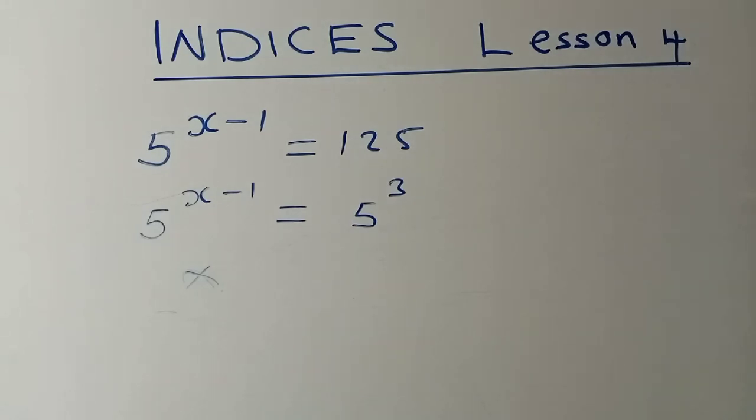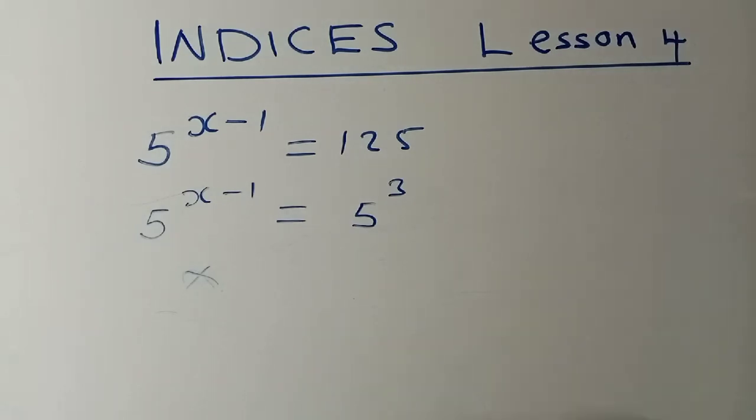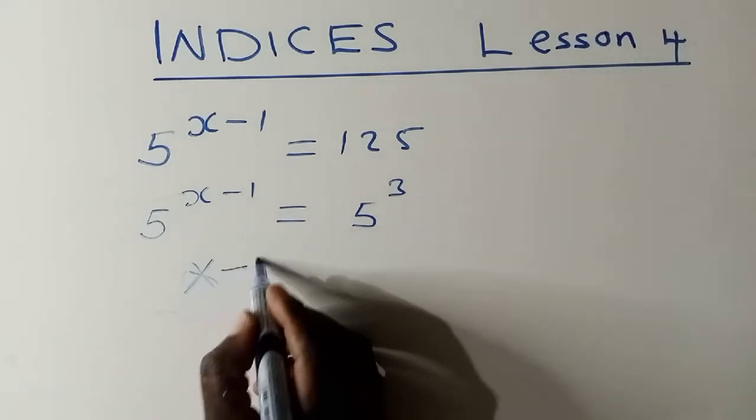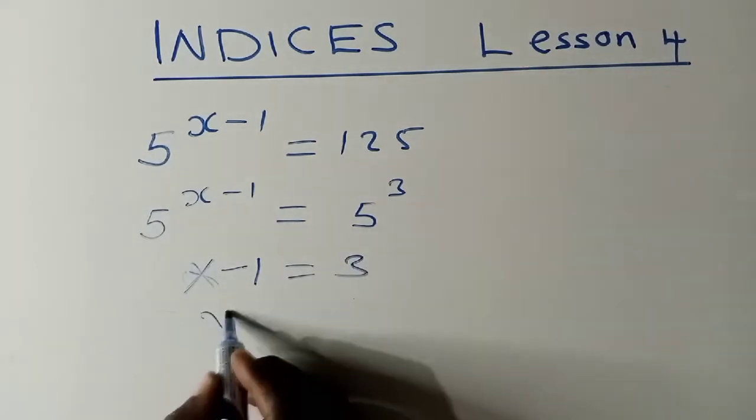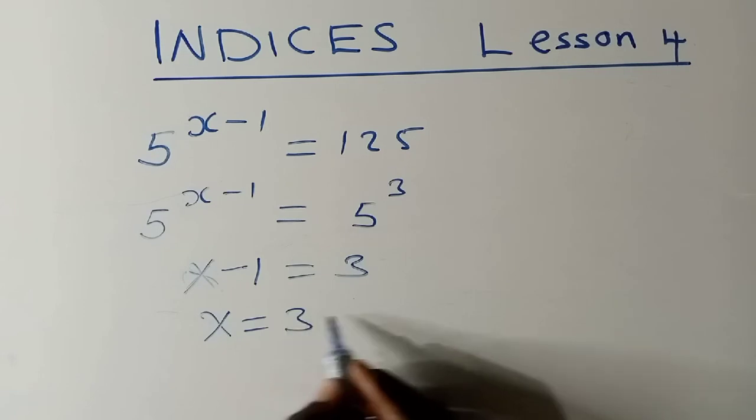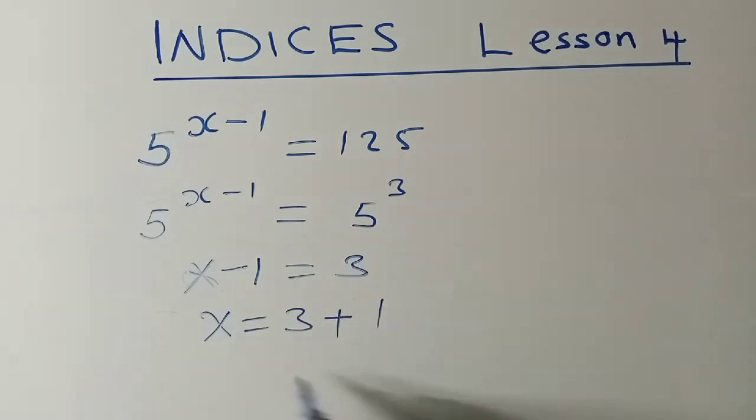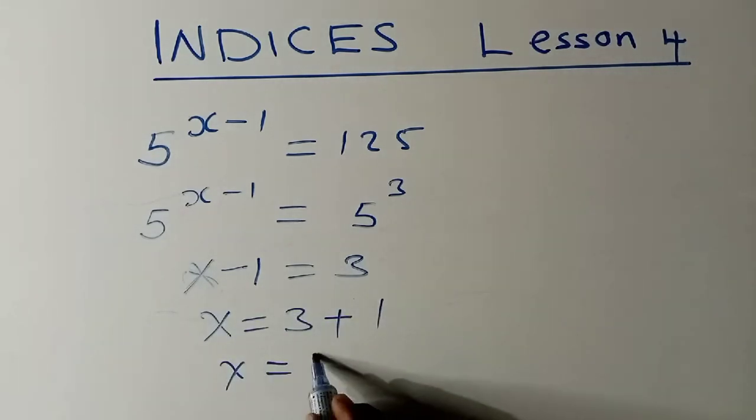We'll say x minus 1 is equal to 3. So this is what you do. Solve this equation. You're solving for x. The answer is equal to 4, okay?